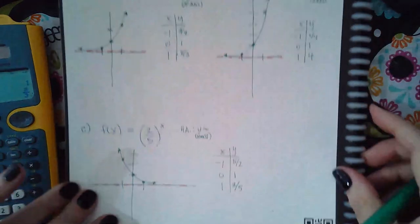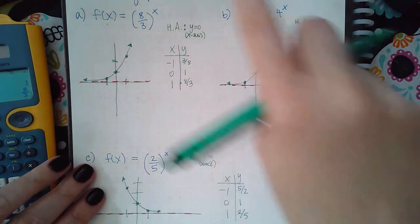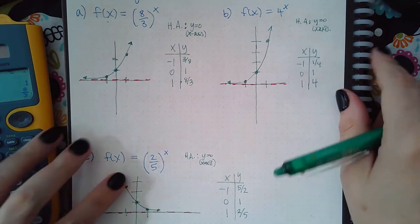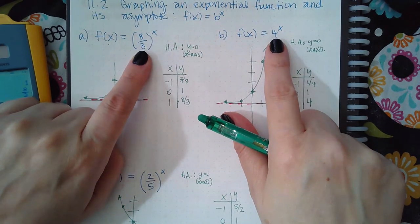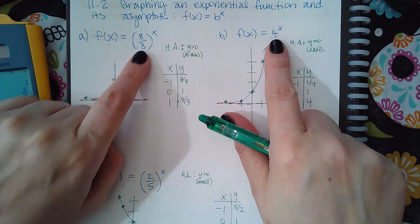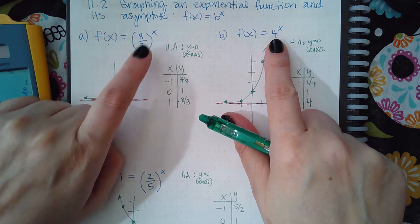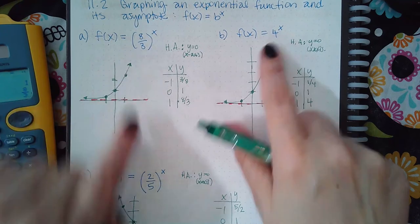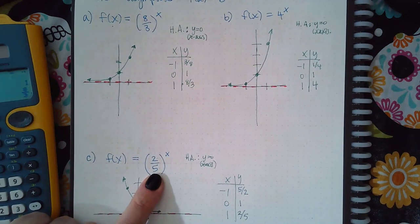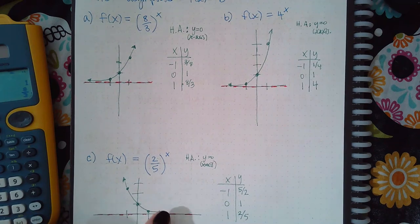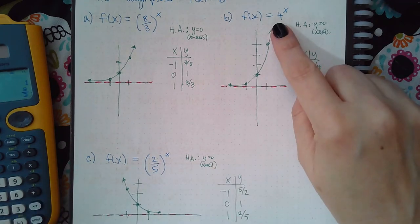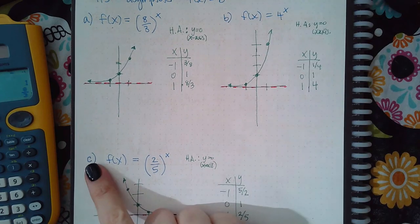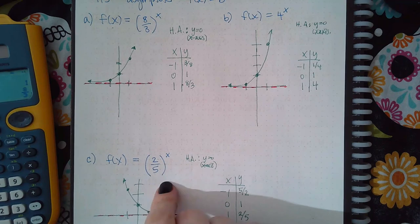Why did those other two graphs go up toward the right while this one goes up toward the left? The difference is that those bases are numbers larger than one — eight-thirds is two and two-thirds, so bigger than one; base four is bigger than one. But two-fifths is less than one, which is why the curve goes off toward the negative direction. That's the big determining factor: if the base is bigger than one, it goes up on the positive x side; if the base is less than one, it goes up on the negative x side.